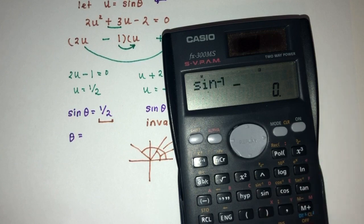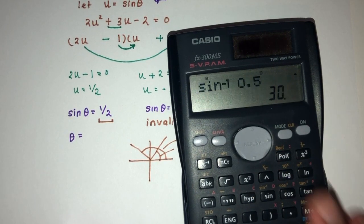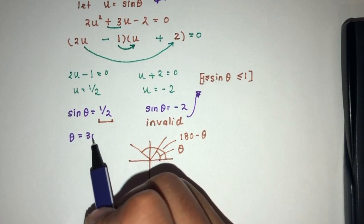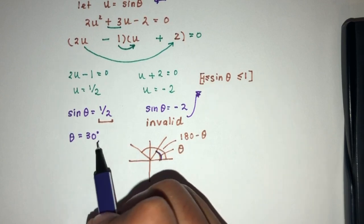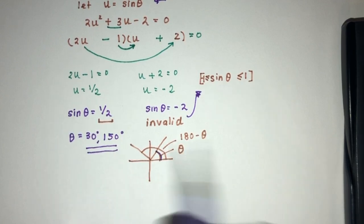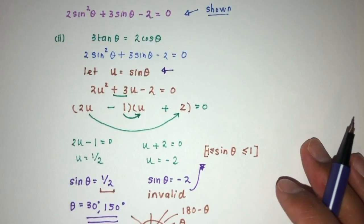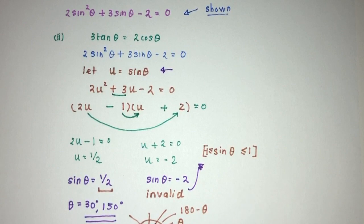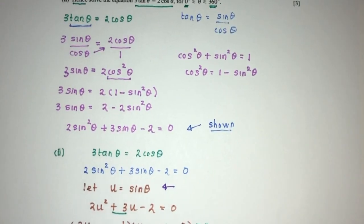This is the first angle here. We also have to find this one. That will be 180 - 30. That should be 150 as your answer. So here in the end, we end up with two values for θ. θ will be 30 or 150 as your final value for this equation to be true. And this is a question involving trigonometry.